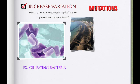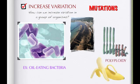This was done with bacteria to create oil-eating bacteria. Another thing you can do is take certain plants and actually double or triple their chromosomes — that's called polyploidy. If that happens in humans it's destructive, but in plants you get larger plants.